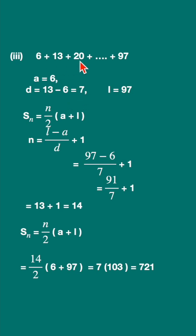You can check it: even this, 20 minus 13, is 7. d is the common difference, a the first term is 6. Put it in this formula: S_n is equal to n upon 2 (a plus l). Why we are using this formula? Because we are given the last term.